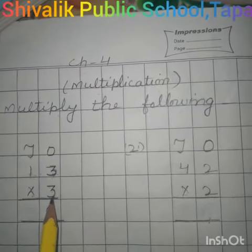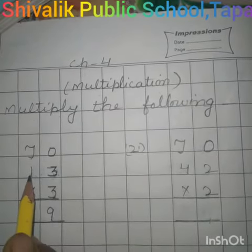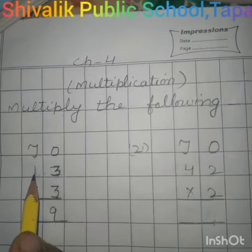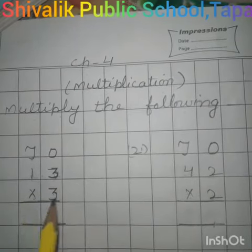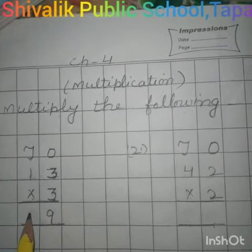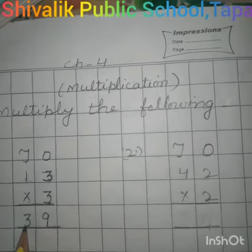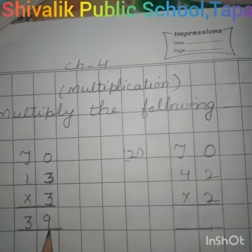Now we will read the table of 3 up to 10s place, which is at 1. 3 ones are 3. So we write here 3. Now the answer is 39.